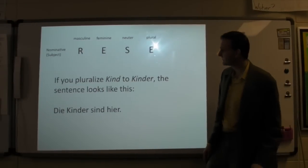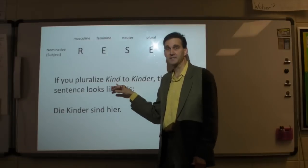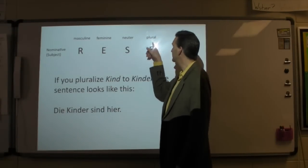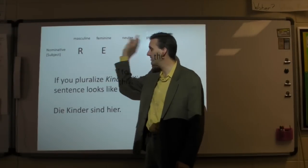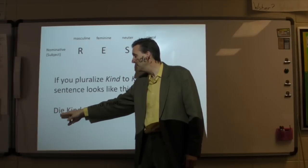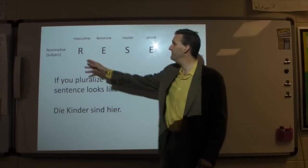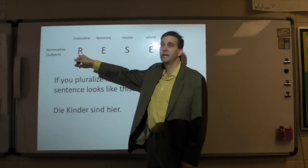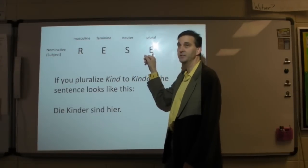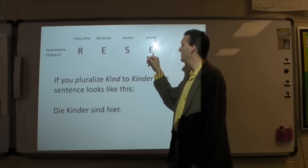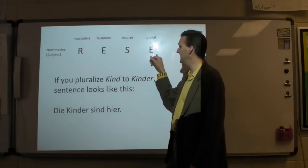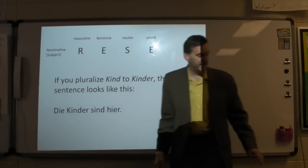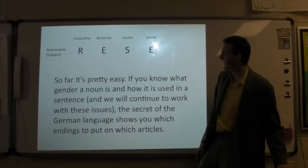Now, if we pluralize Kind, of course we know that's Kinder. Kinder needs the E because now it's plural. If I pluralize any of them, it would be die. Die Kinder sind hier. Die Männer sind hier. Die Frauen sind hier. So once I pluralize Mann to Männer, or Frau to Frauen, or Kind to Kinder, we have to use this E here: die Kinder, die Männer, die Frauen.